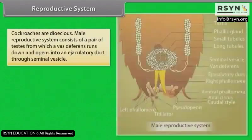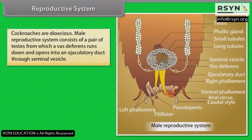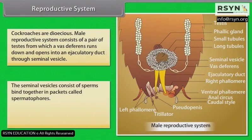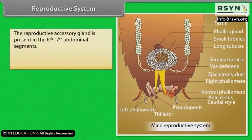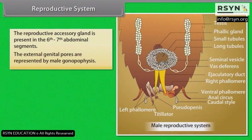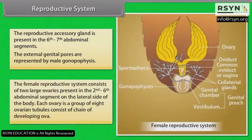Reproductive System: Cockroaches are dioecious. The male reproductive system consists of a pair of testes from which a vas deferens runs down and opens into an ejaculatory duct through the seminal vesicle. The seminal vesicles contain sperms bound together in packets called spermatophores. The ejaculatory duct opens into male gonopores present on the ventral side of the anus. The reproductive accessory gland is present in the sixth and seventh abdominal segments.